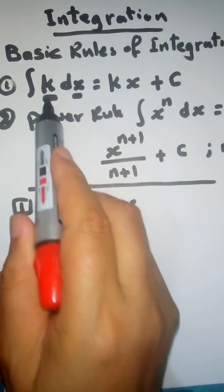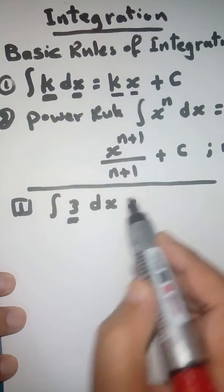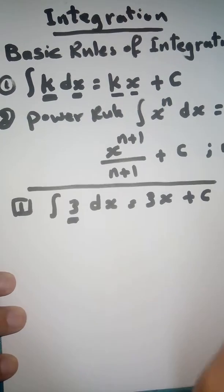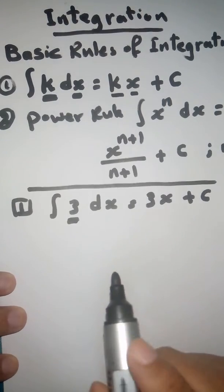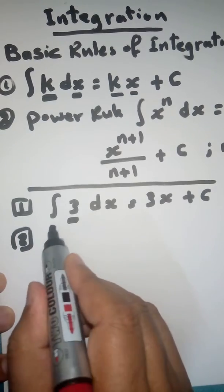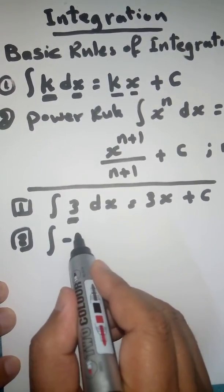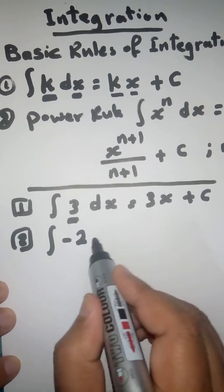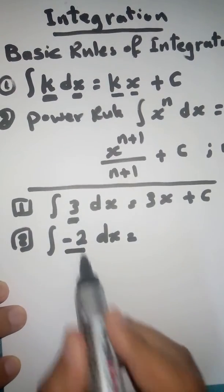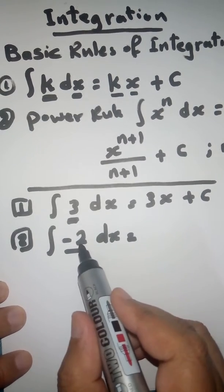For example, when we want to evaluate the integral of 3 dx: 3 is a constant like K, so you multiply K by X, giving 3X plus the constant of integration C. Example two: the integral of negative 2 with respect to X. Negative 2 is a constant, so it will be negative 2 multiplied by X.